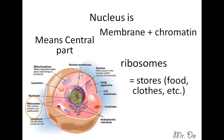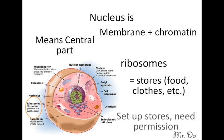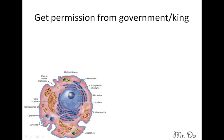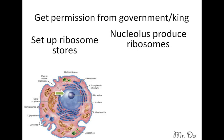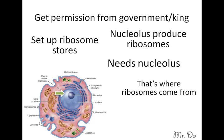Ribosomes are equivalent to stores. There are free-floating ribosomes and those that are attached. In order to set up stores, you need permission from the government or the king — and that's equivalent to our nucleolus. So the nucleolus produces ribosomes, and the nucleus stores information.